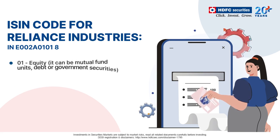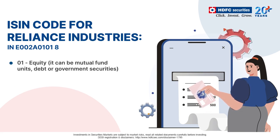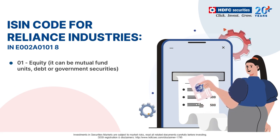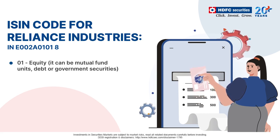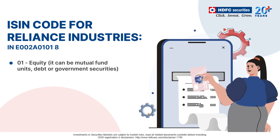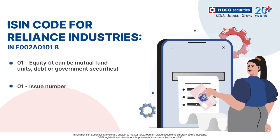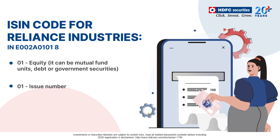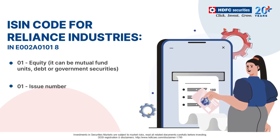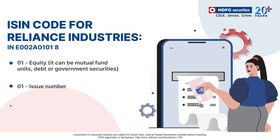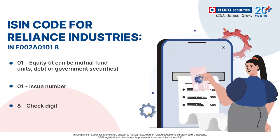In this case, the following two digits, 01, are used to identify the type of security, like shares, mutual funds, bonds, etc. The next two digits, also 01 in this example, are issued for serial order for each security. Finally, the check digit, 08 in this case, helps to validate the code.